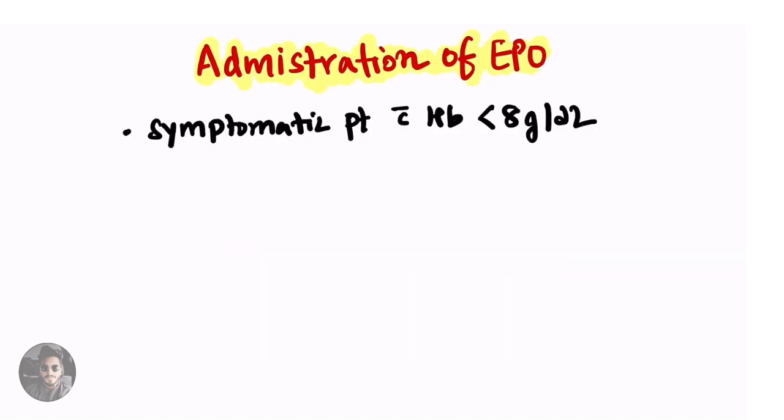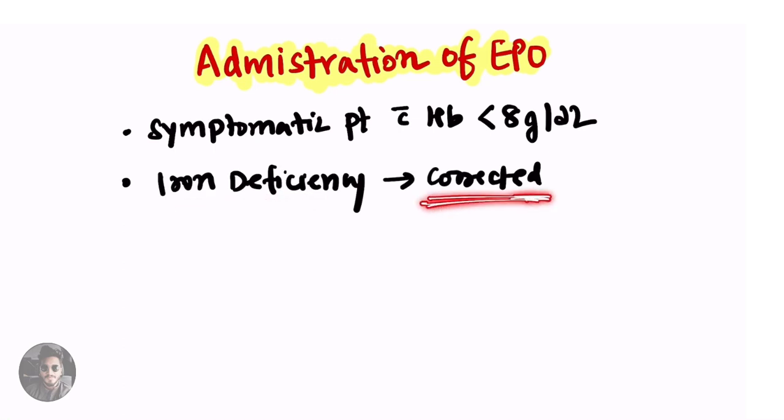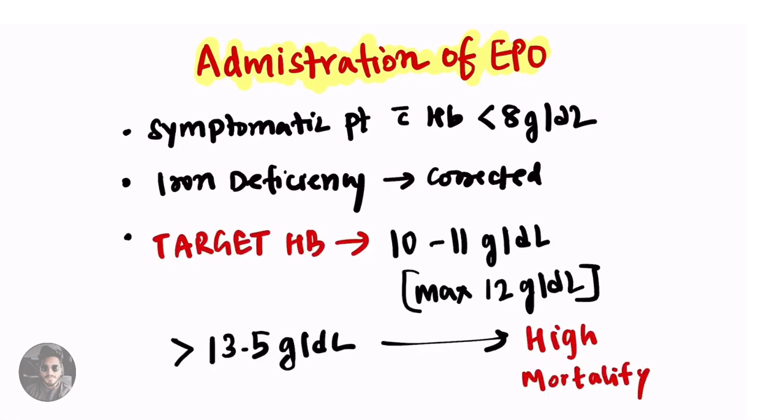Now some important points to be considered during administration of EPO. It is only indicated in symptomatic patients with Hb of less than 8g per dl. Before giving EPO we should always rule out iron deficiency and it must be corrected. EPO helps in maturation of RBCs and requires functional marrow. While giving EPO therapy the target haemoglobin should be 10-11g per dl maximum 12g per dl. Many studies have shown that using EPO to increase the haemoglobin to more than 13.5g per dl is associated with high mortality.